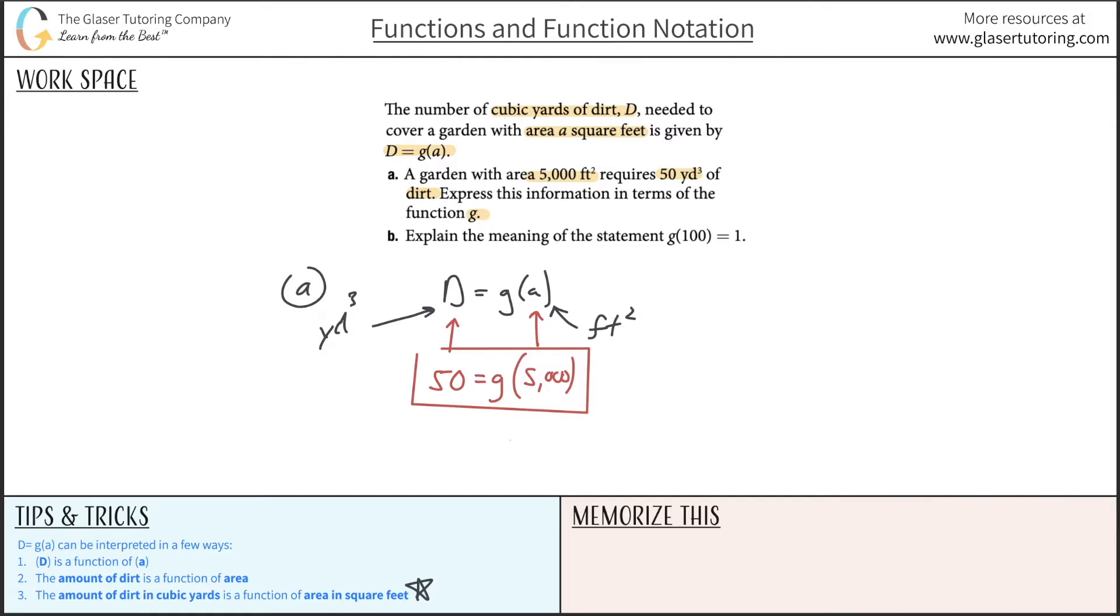Now letter b is going to say explain the meaning of the statement g(100) = 1. Same thing - I'm going to start with my general function here. That should be an a in there. Remember this represents the amount of dirt in cubic yards, this is a function, and it's a function of the area in square feet.